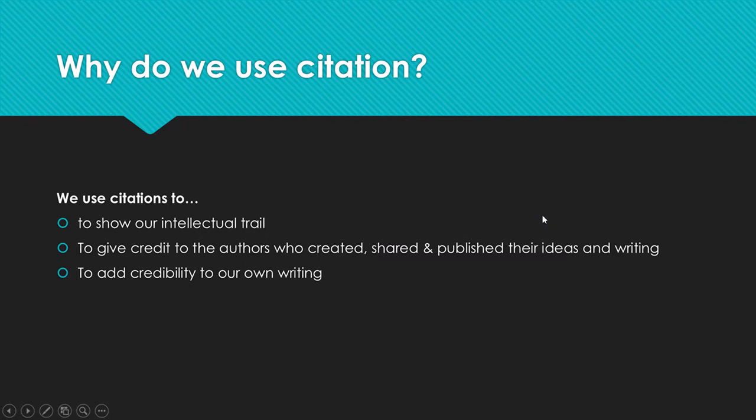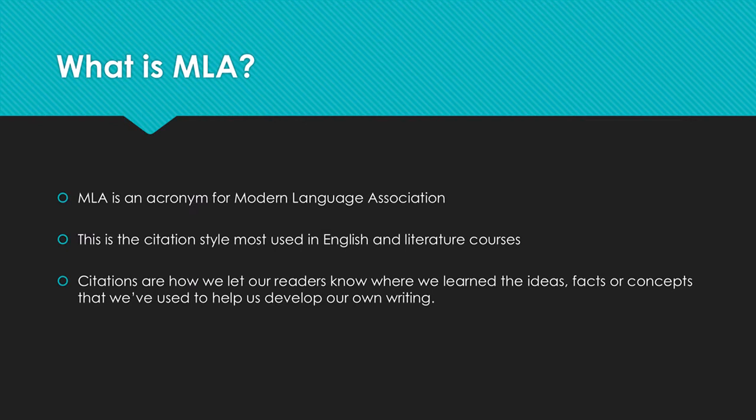So what is MLA? MLA is basically an acronym for Modern Language Association, and this is one citation style that's used in English and literature courses. There are other citation styles that you may have heard of, like APA or Chicago style. The one you're learning about today is MLA. Citations, no matter what kind of style — APA, Chicago, or MLA — are what we use to let our readers know where we learned the facts, ideas, or concepts that we're developing in our own writing.